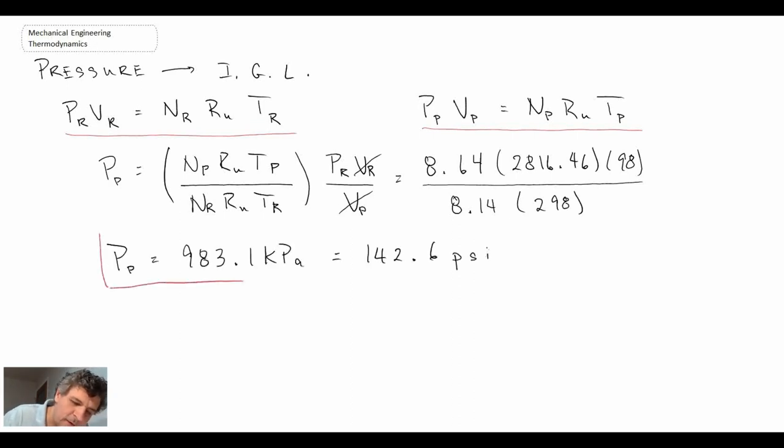So when we do that, we get this for being our final pressure, 983 kPa, or about 142.6 psi. And this would simulate what we would have for the auto cycle if we were able to get the adiabatic flame temperature inside of the auto cycle.